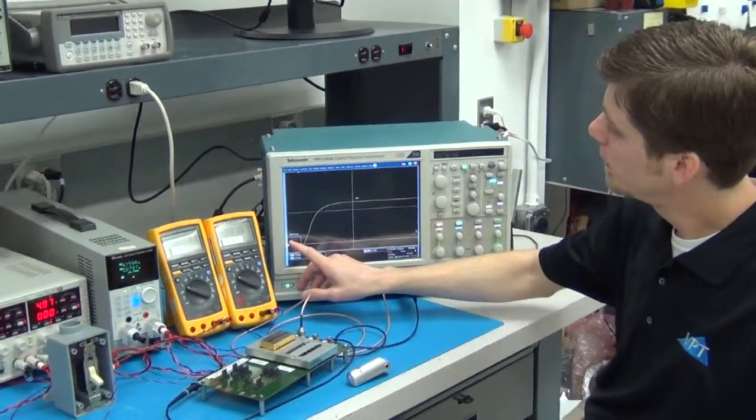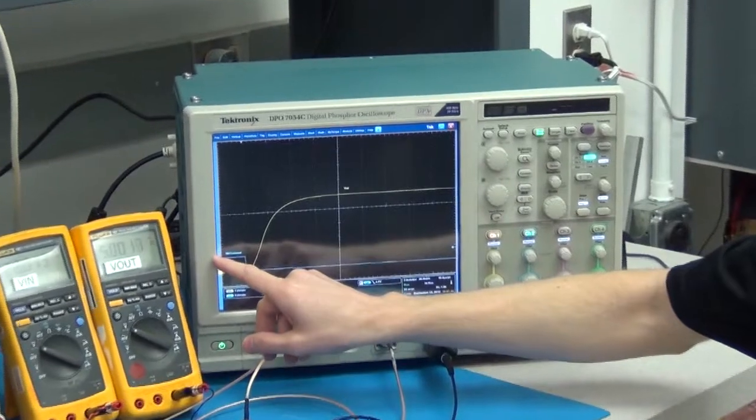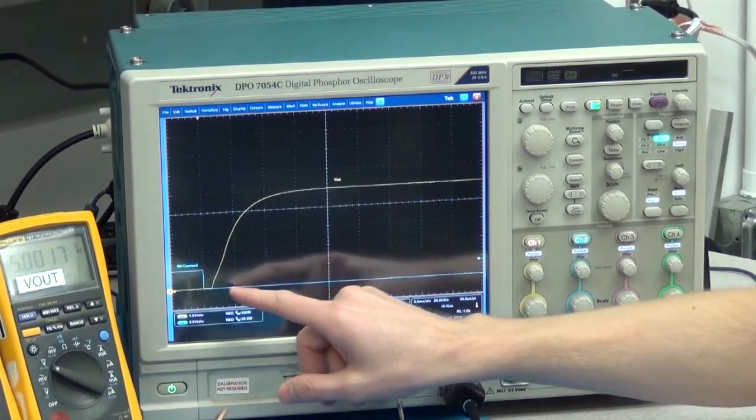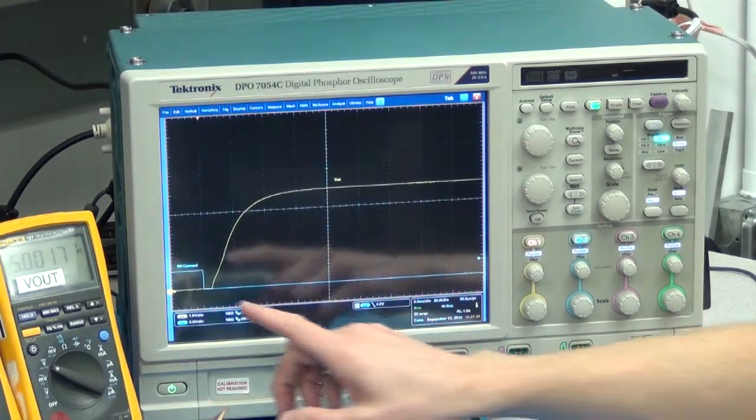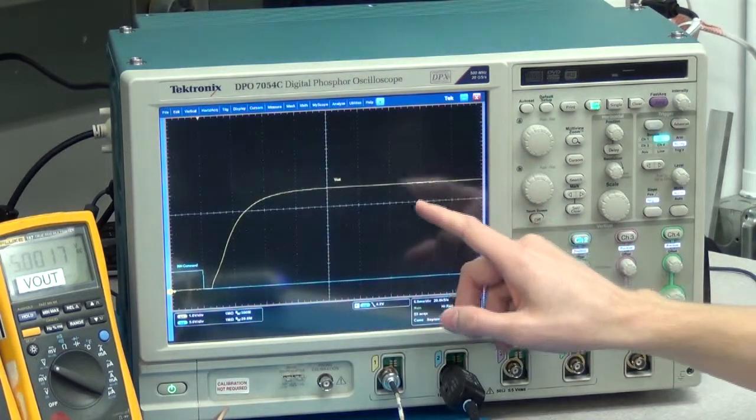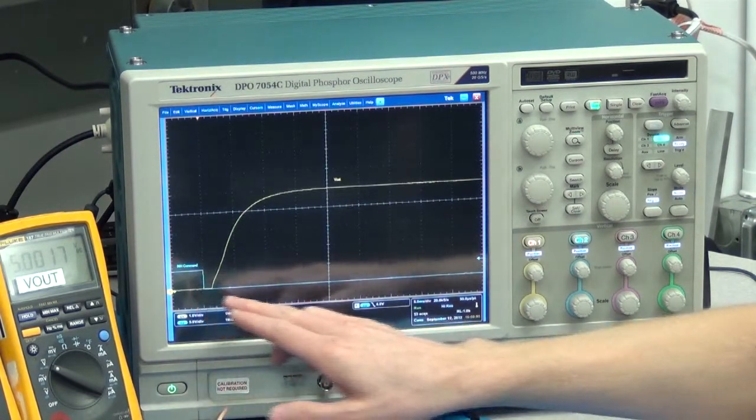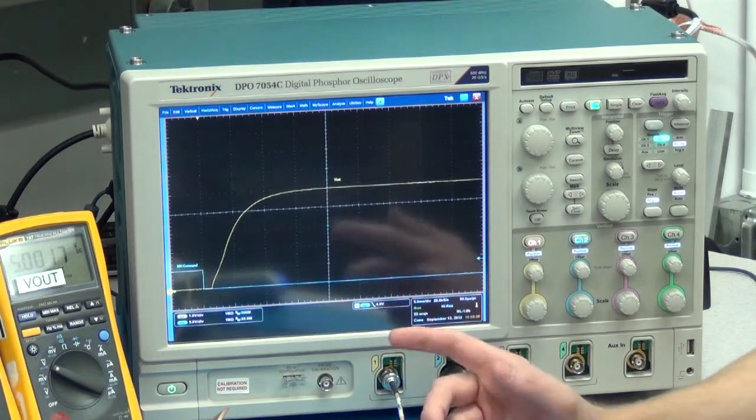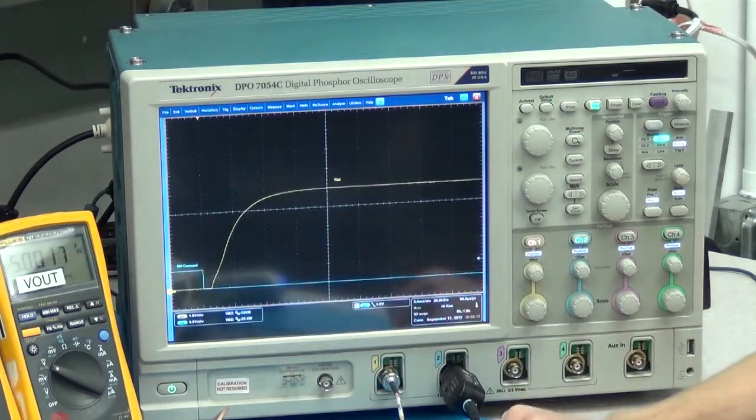So in blue is my command signal, 5 volts which inhibits the converter. And as I release this 5 volts that's driving the BJT, the BJT is then releasing the inhibit pin. And after some delay, we see V-out turn on. The delay for this particular converter at 5 milliseconds per division is about 2 millisecond delay. So after releasing the inhibit pin, 2 millisecond delay and V-out begins to rise.